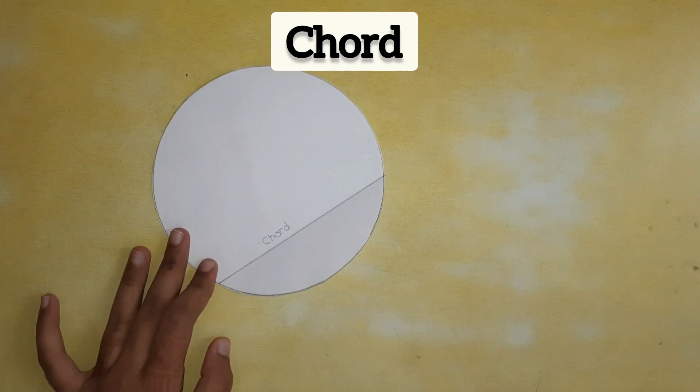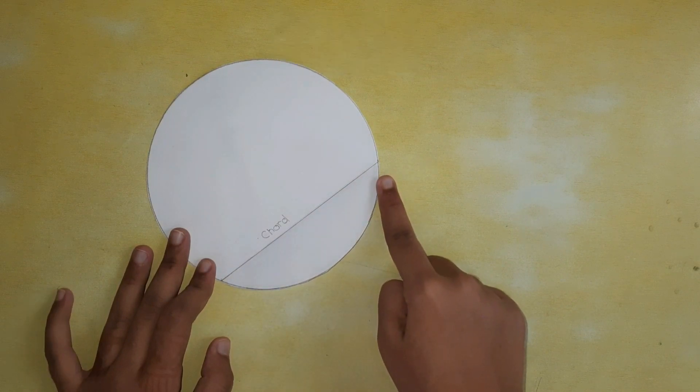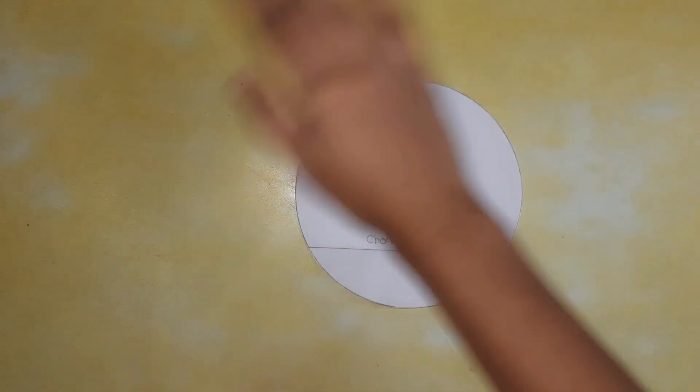The line which joins two ends of a circle is known as a chord.